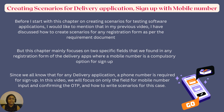Before I start with this chapter on creating scenarios for testing software applications, I would like to mention that in my previous video I discussed how to create scenarios for any registration form as per the requirement document. But this chapter mainly focuses on two specific fields found in any registration form of delivery apps where a mobile number is the compulsory option for sign-up. In this video, we will focus on only the mobile number input field and confirming the OTP, and how to write scenarios for this case.